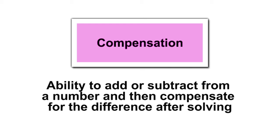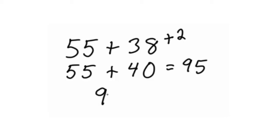The last method is compensation. Compensation is the ability to add or subtract from a number and then compensate for the difference after solving. For example, 55 plus 38. Students may change 38 to 40, add 55 plus 40 to get 95, then subtract the two they added earlier to get 93.